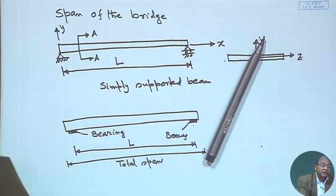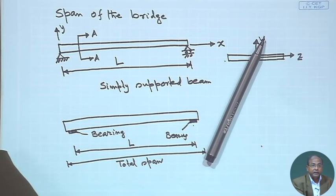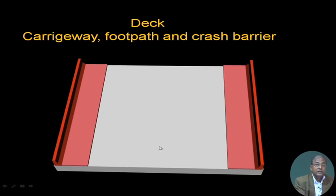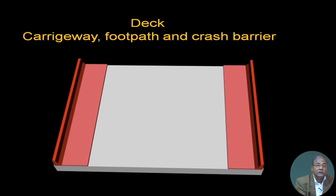Coming back to the figure again, we have two spans — the effective span and the total span. From the construction point of view you have to get the total span, because that is the actual quantity. For analysis purposes it will be the effective span. The question now is what will be the length in the z-axis.